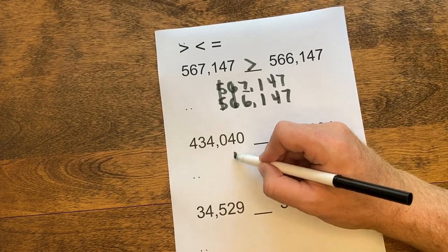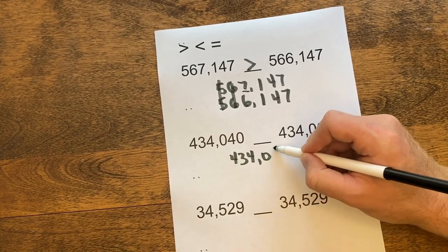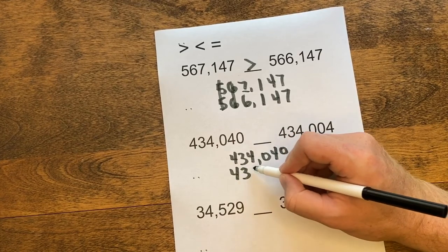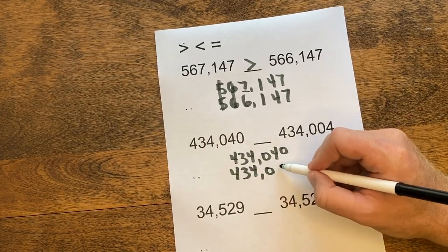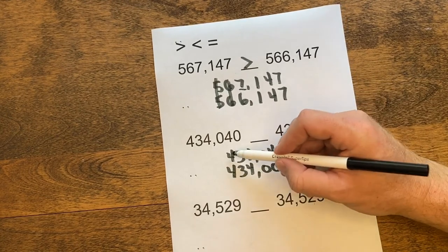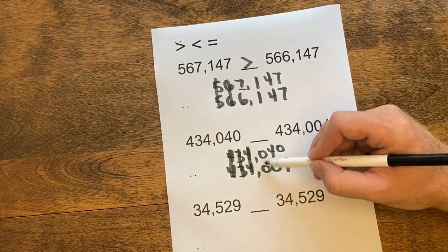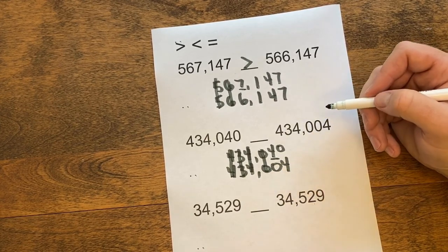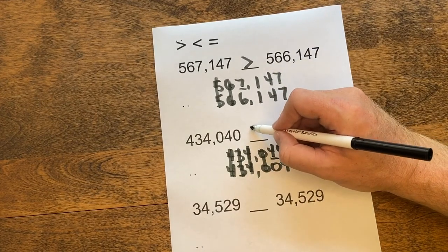Let's do another example. I'm going to copy the numbers carefully, making sure I get all my digits right: 434,004. I'm going to start comparing from the left. My 4's are the same, 3's are the same, 4's are the same, 0's are the same. I'm all the way to my tens spot — the 4 is bigger. So again, I have the greater than sign.